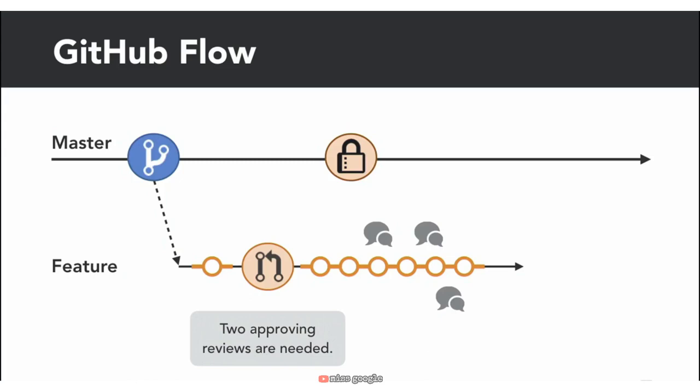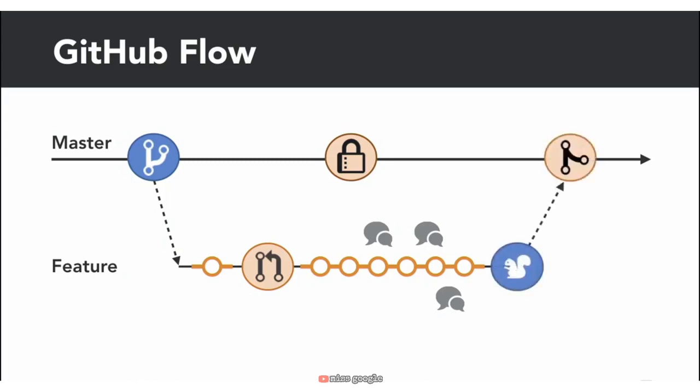At this point, we can add another branch protection to require a pull request review to be approved before this branch can be merged. For example, maybe this branch protection says that there needs to be two approving reviews on the pull request before it can be merged. When it comes to merging, we can apply another branch protection to make sure our branch is up-to-date from master so we can run our CI checks again before we finally merge. We can then confidently merge our code into master because we know the branch is up-to-date, CI builds have passed, and the pull request has an approving review.